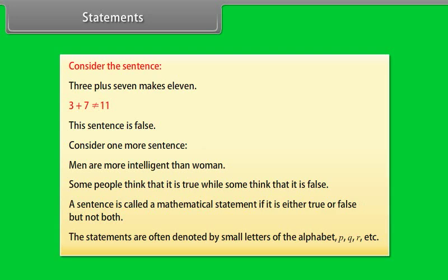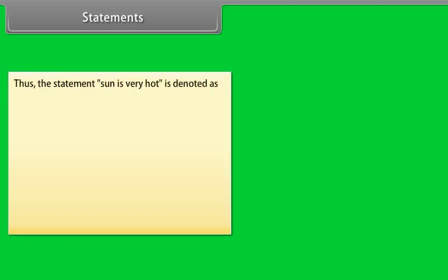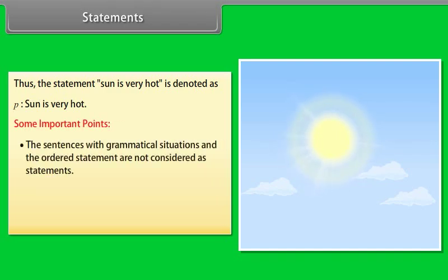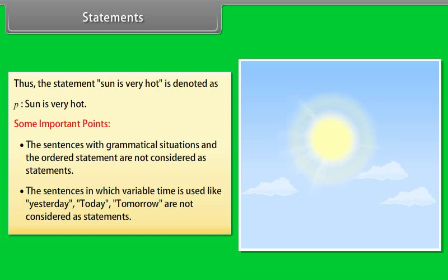Statements are often denoted by small letters of the alphabet: P, Q, R, etc. Thus, the statement 'Sun is very hot' is denoted as P: Sun is very hot. Important points: sentences with grammatical ambiguities or ordered statements are not considered statements. Sentences using variable time words like yesterday, today, or tomorrow are also not considered statements.